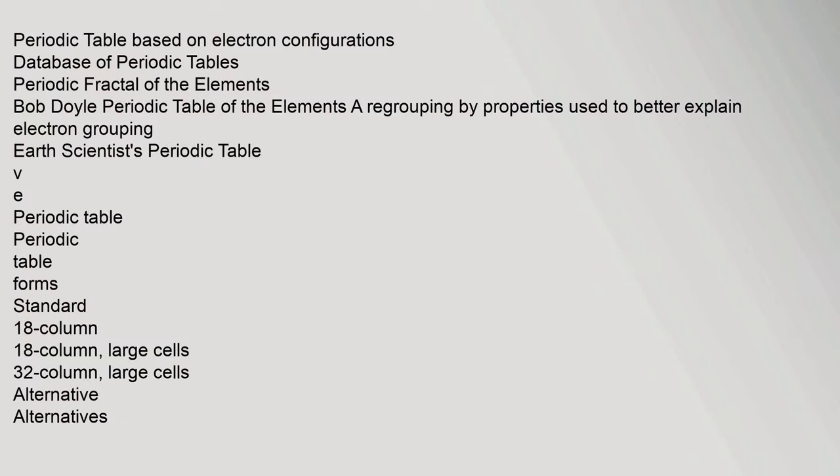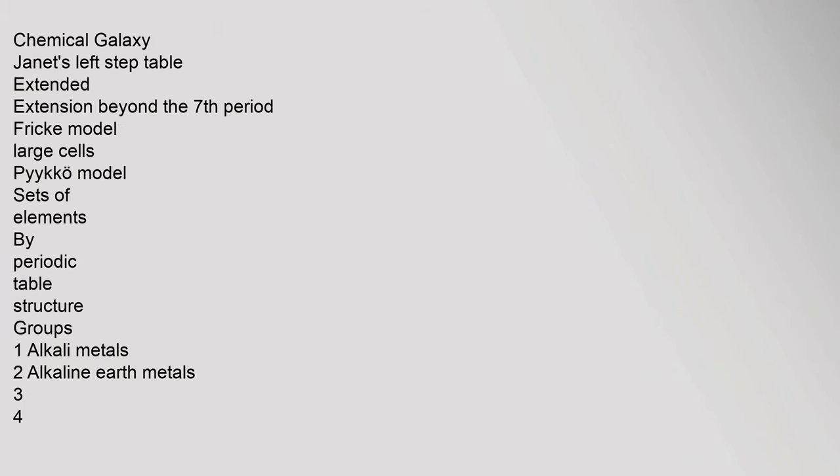Further resources: periodic table based on electron configurations, database of periodic tables, periodic fractal of the elements by Bob Doyle, periodic table of the elements regrouped by properties to better explain electron grouping. Periodic table forms: standard 18-column, 18-column large cells, 32-column large cells. Alternative forms include Chemical Galaxy, Janet's Left Step Table, extended beyond the 7th period, Fricke Model, and PyEiko Model.